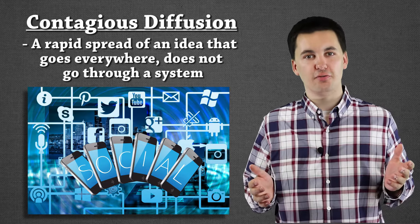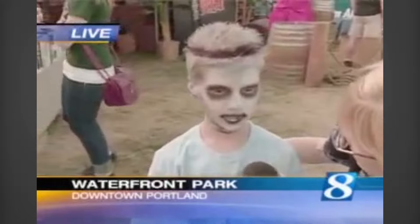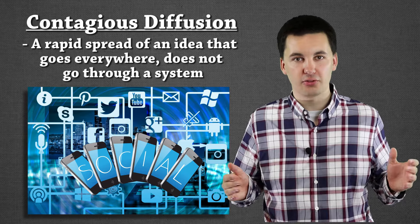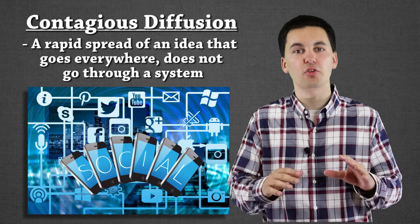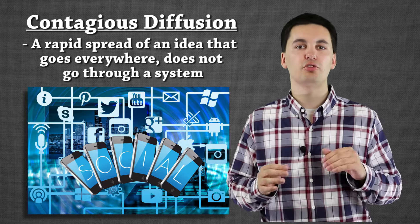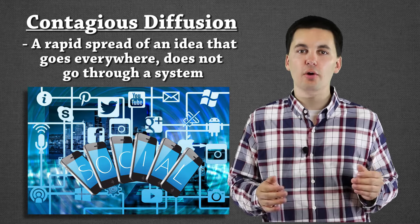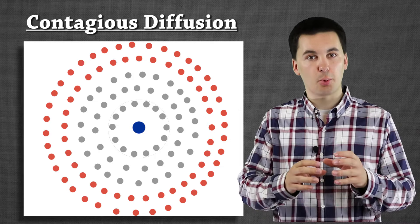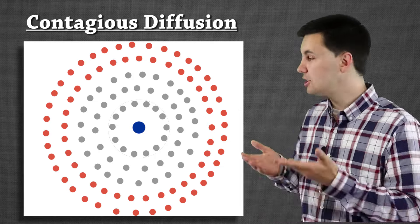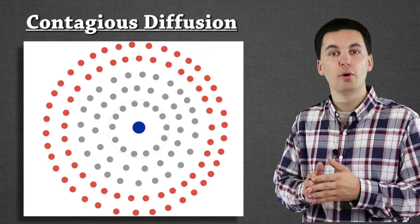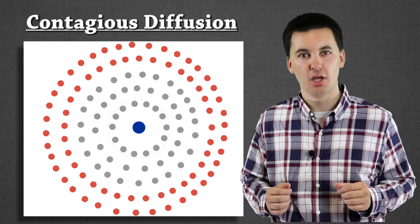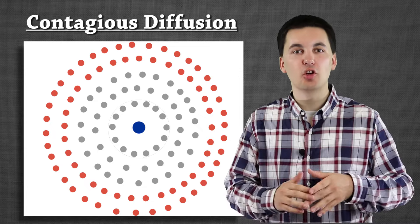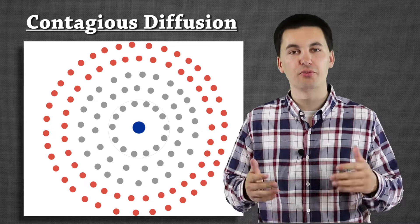Our next type of expansion diffusion can best be summarized with a viral video — something that goes very quickly and diffuses throughout society with not a lot of barriers stopping it. It diffuses in all directions to all people, and no one is restricted from access to the content. It's not going from a top-down approach like hierarchical. We can see a great visual where the center point — our hearth — is spreading in all directions, with the idea or topic going all over the place and everyone having access to it. When you're thinking of contagious diffusion, think of a viral video or a viral tweet — something that spreads fast, goes to everyone, and no one is kept out of the loop.